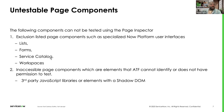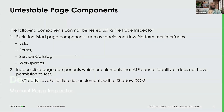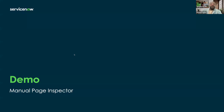The second category of untestable components is the inaccessible page components. These refer to third-party JavaScript libraries or elements that have some form of Shadow DOM. Now that we've gone through the types of components that can and cannot be tested within Manual Page Inspector, I'll hand over to Amanda for the demo.